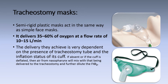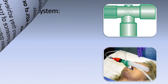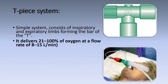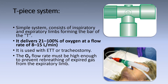This is why the tracheostomy mask may be considered as either a variable or fixed performance device. The T-piece system is a simple system consisting of an inspiratory and expiratory limb forming the bar of the T-piece, connected to the endotracheal tube. It delivers 21 to 100% oxygen at a flow rate of 8 to 15 liters per minute. It is used with an endotracheal tube or tracheostomy tube, and the oxygen flow rate must be high enough to prevent breathing of expired gas from the expiratory limb.